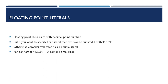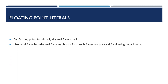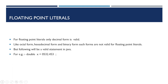So if I assign a floating decimal value to float type without suffixing small 'f' or capital 'F', I am going to get a compile time error. The only valid form for floating point literals is decimal form. We cannot assign in octal form, binary form, or hexadecimal form like integral literals. The only form in which we can assign floating point literals is the decimal form.